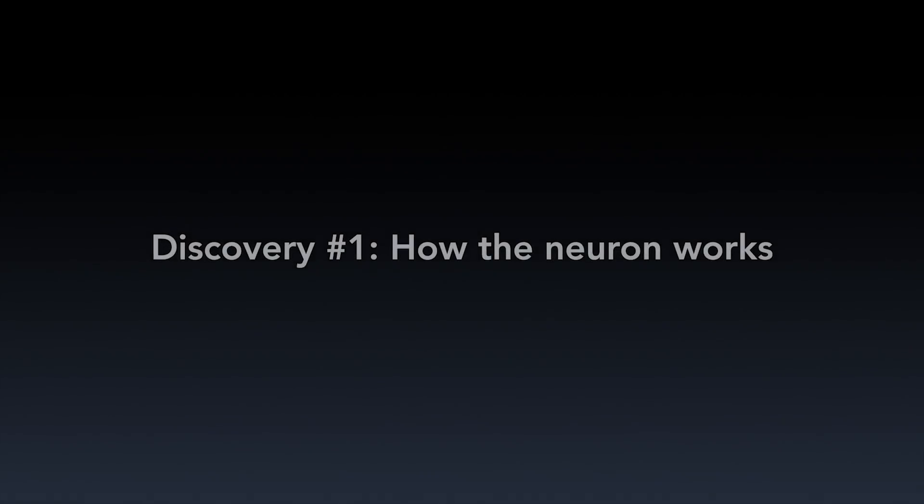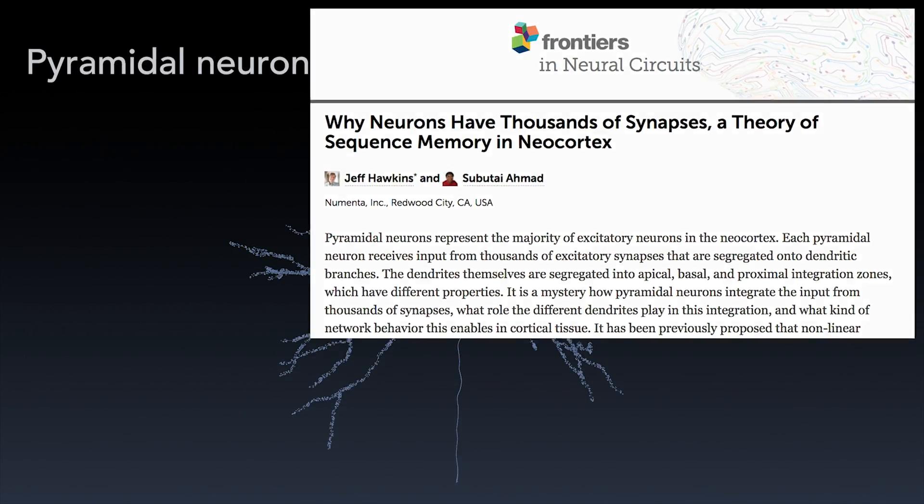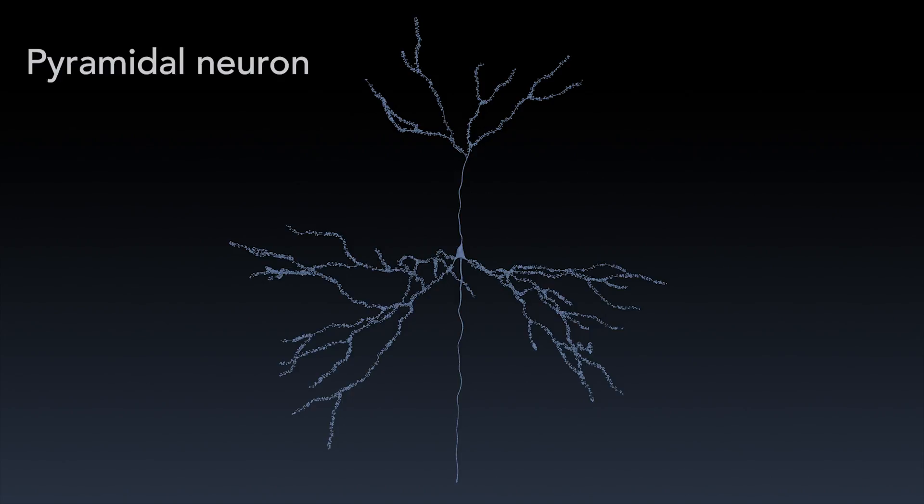First is a new understanding of how the neuron works and the function of dendritic spikes. This discovery is documented in a March 2016 paper called Why Neurons Have Thousands of Synapses, a Theory of Sequence Memory in Neocortex. The main idea is that every pyramidal cell is a prediction machine.